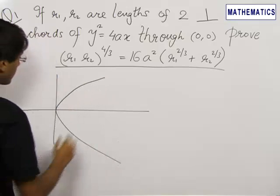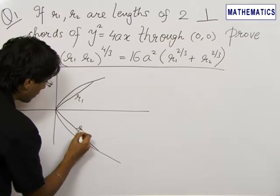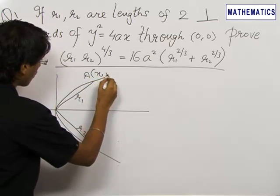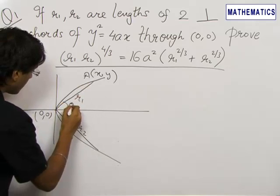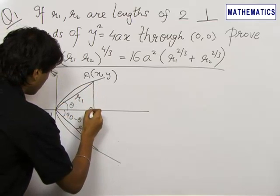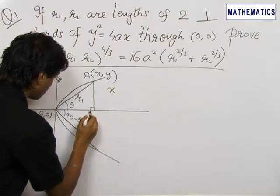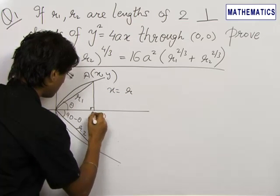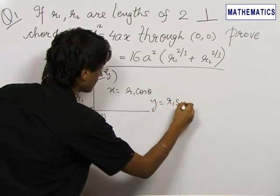If this is the parabola y² = 4ax, this is the chord of length R1 and this is the chord of length R2 through the origin. Let us say this point is A with coordinates (x, y). Since these two chords are mutually perpendicular, if this angle is theta, this will be 90 minus theta. Completing the triangle, we find that x = R1·cos θ and y = R1·sin θ.